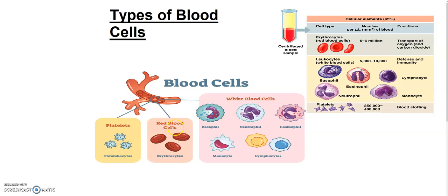RBC — red blood cells — are also called erythrocytes. In today's video we will see what shape erythrocytes have and whether they have a nucleus or not. Erythrocytes are circular or biconcave in shape, like you can see in the picture — a disc-like shape. The nucleus is absent; no nucleus is found. And they contain hemoglobin, which is why they are red in color.